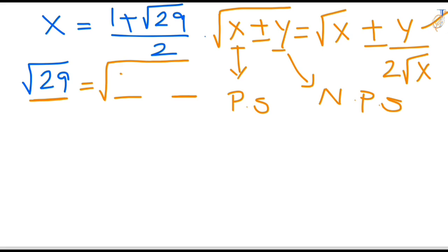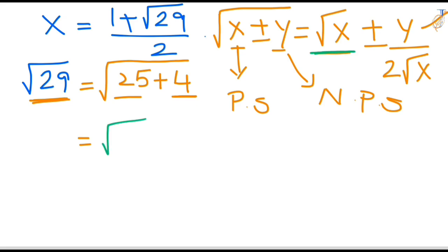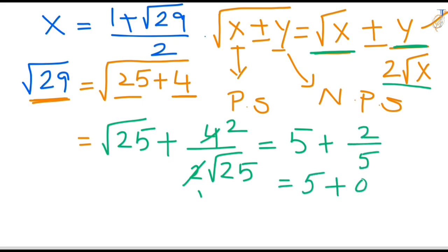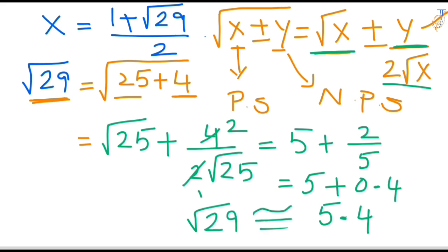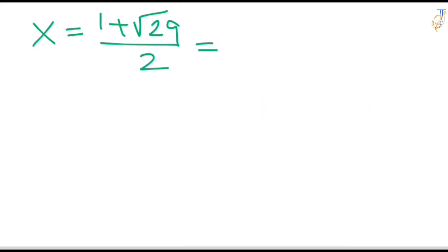Applying the formula: square root of (25 plus 4) equals square root of 25 plus 4 divided by 2 times square root of 25. Root 25 is 5, so this gives 5 plus 4 over 10, which is 5 plus 0.4, equal to 5.4. So root 29 is approximately equal to 5.4. This is the super trick for finding non-perfect square roots.